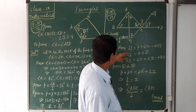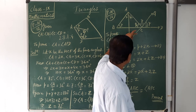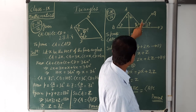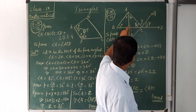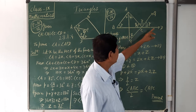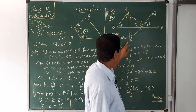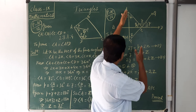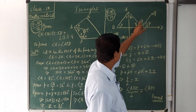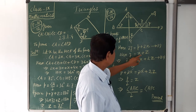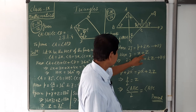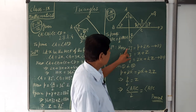Also, in triangle APC where side PC is produced, the exterior angle y equals the sum of the two opposite interior angles: y = z + x. Multiplying this equation by 2 to get 2y: 2y = 2x + 2z. Call this equation 2. Call the earlier one equation 1.